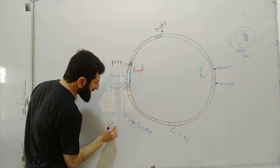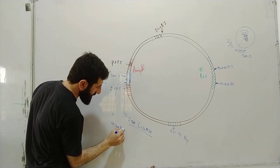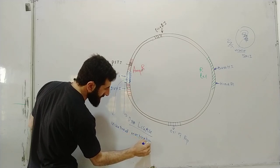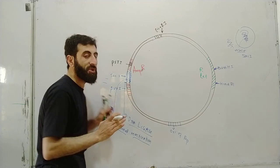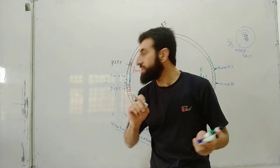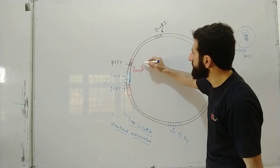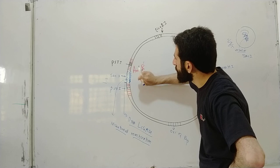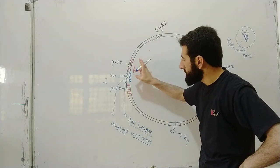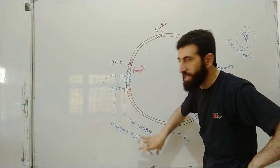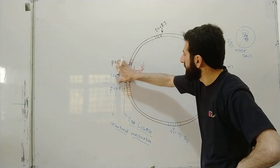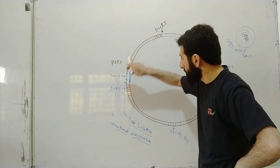This brings us to insertional inactivation. Insertional inactivation is the process by which a gene becomes inactive when we insert desired DNA into it. For example, when we insert the human gene into the tetracycline resistance gene site, we inactivate that tetracycline resistance gene.